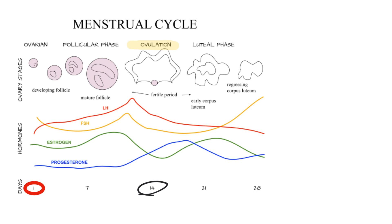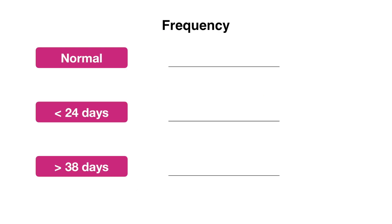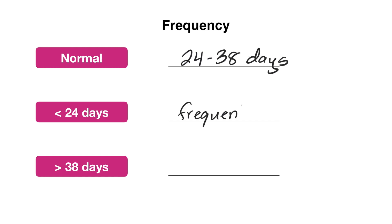Now that we've gone over the menstrual cycle, let's go over some standard definitions of what constitutes normal versus abnormal menstrual bleeding, starting with frequency. A normal menstrual cycle should occur between 24 to 38 days. If it occurs below this range, we call this a frequent menstrual cycle, and if it occurs more than this range, we call this an infrequent menstrual cycle.